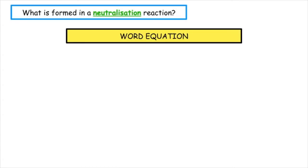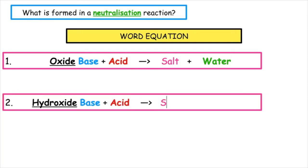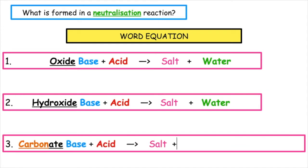From the previous video, we looked at the three different word equations that we have to know. We've got an oxide base, a hydroxide base, and a carbonate base. When they react with acids, they will always produce salt plus water. But the carbonate base also produces a third product, which is carbon dioxide gas.